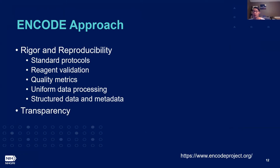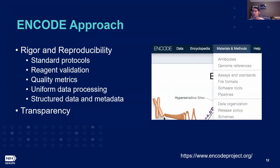There are uniform data processing pipelines, and this is especially important when the same data types are coming from different groups. Last but not least, there is importance to the structuring of data and metadata that enables the use of these data in downstream computational analyses — structuring these data and metadata enables search and retrieval. You can find out more about this on the portal under Materials and Methods.